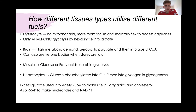Hepatocytes are kind of the center part of all the utilization of energy, which we'll go on to talk about. They can perform phosphorylation of glucose into glucose 6-phosphate, and that can then be stored as glycogen through glycogenesis in the liver. Excess glucose can also be used to make acetyl-CoA to make fatty acids and cholesterol. Ribose 5-phosphate can be made to be utilized for nucleotides and as the backbone of that, as well as NADPH.